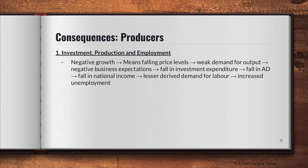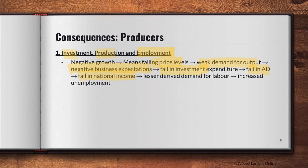For producers, the impact depends on whether you're looking at rapid growth or negative and slow growth — you need to identify this from the context of the question. Generally, investment, production, and employment are affected. If there is negative growth, it likely means falling price levels and weak demand for output, leading to negative business expectations. This results in a fall in investment and a fall in national income, and consequently a lesser derived demand for labor due to the need to cut costs.